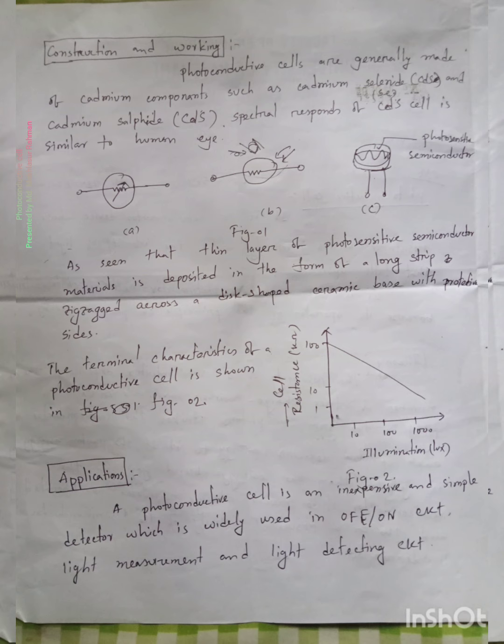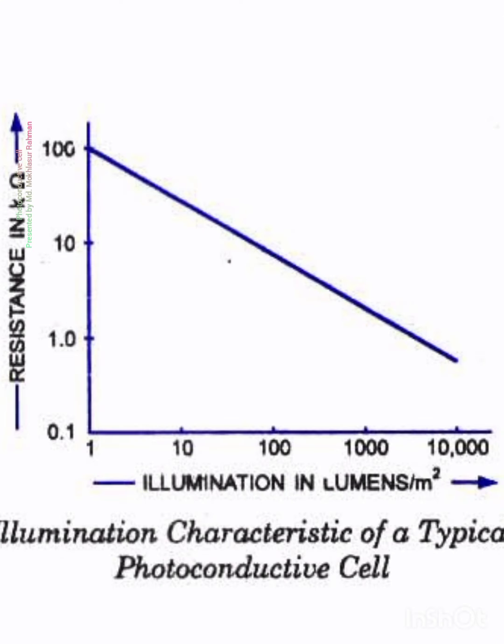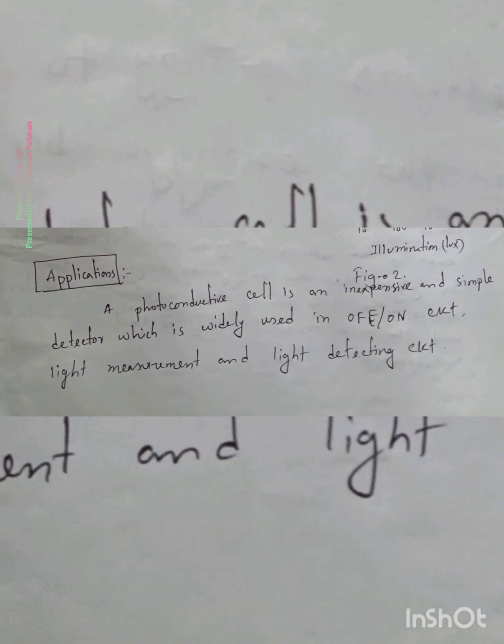The spectral response of cadmium sulfide is similar to human eye. A thin layer of photosensitive semiconductor material is deposited in the form of a long zigzag across a ceramic base. The photoelectric material is deposited on the ceramic base. The terminals and characteristics - the photoconductive cell shows that in bright light the resistance decreases.